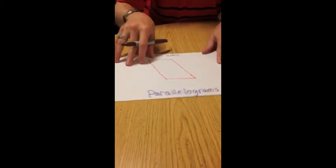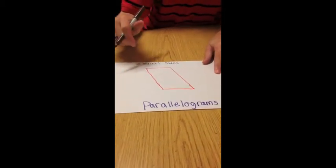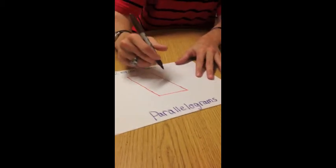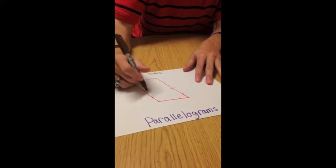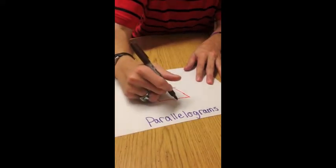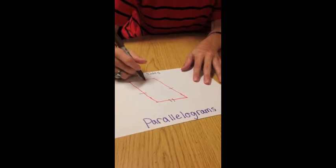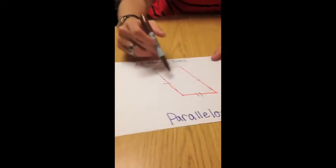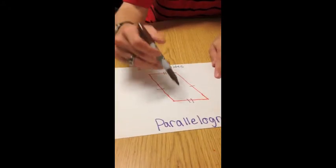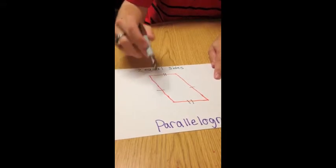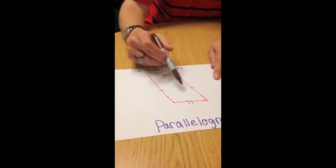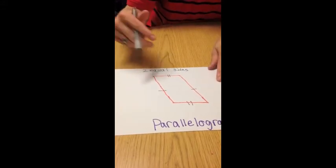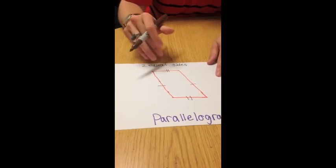The third type of quadrilateral is the parallelogram. The parallelogram has two pairs of parallel lines, and they're also equal to one another, like the rectangle. So you have the left and the right being equal, and the top and the bottom being equal, again, as designated by the equal lines. But, unlike the rectangle and the square, it does not form any right angles.